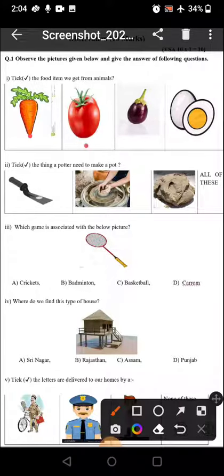We get this from plant, this also from plant, this also from plant. This is an animal product. So you have to tick the food item which we get from animals. We get eggs from animals.